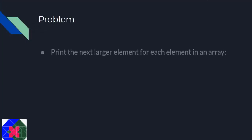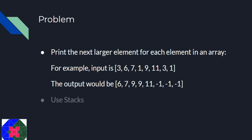So what is the problem? You will be given an array and for every element you have to find the next larger element in that array. For example, if the array is 3, 6, 7 — for 3, the next larger element is 6; for 6, it is 7; for 7, it is 9. For 11, there exists no next larger element, so you put a minus 1 there. Same is the case for 3 and 1.